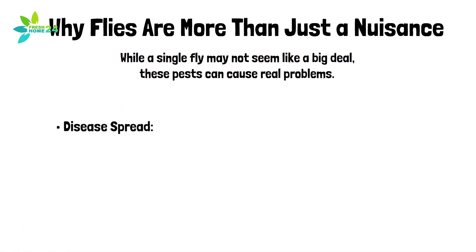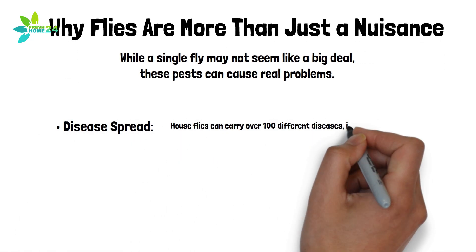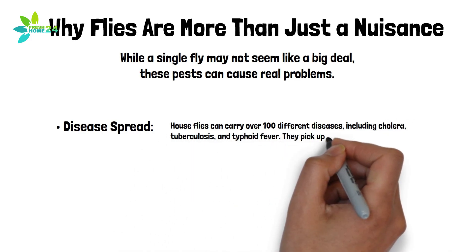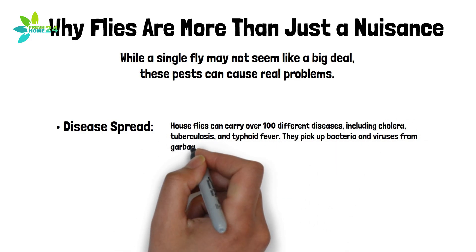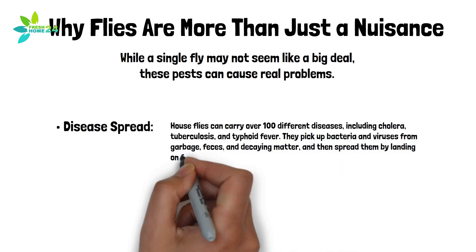Disease spread. House flies can carry over 100 different diseases, including cholera, tuberculosis, and typhoid fever. They pick up bacteria and viruses from garbage, feces, and decaying matter, and then spread them by landing on food, surfaces, or even directly on people.